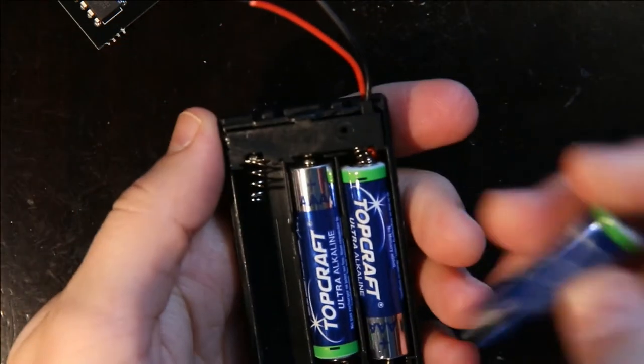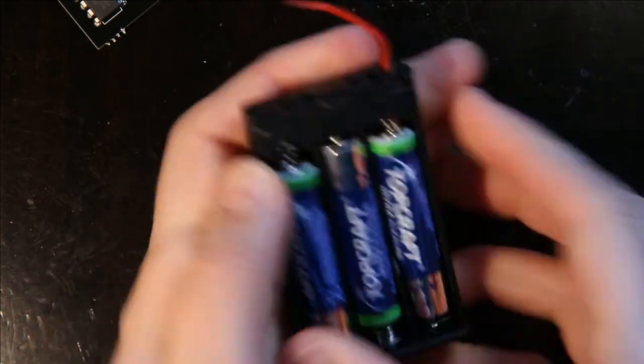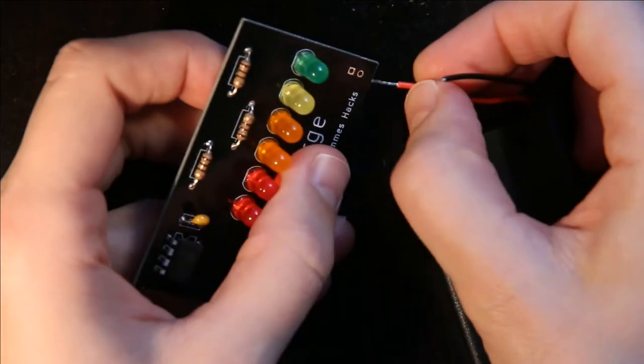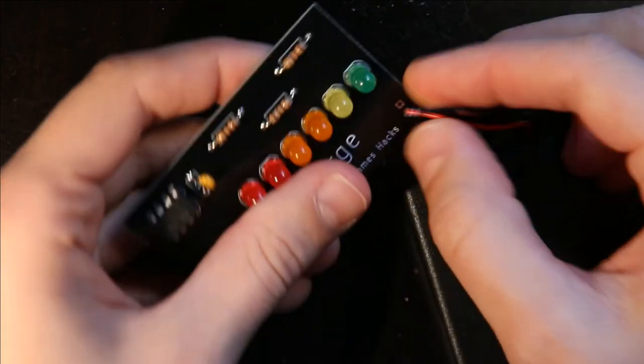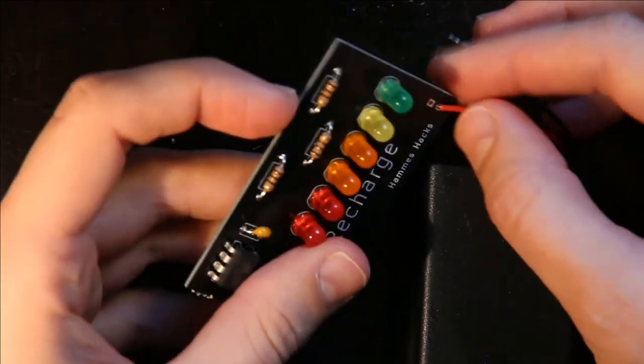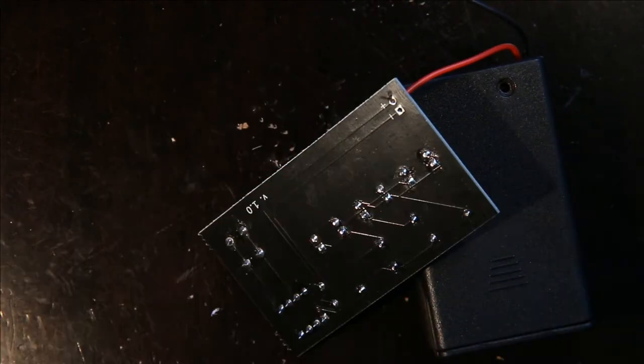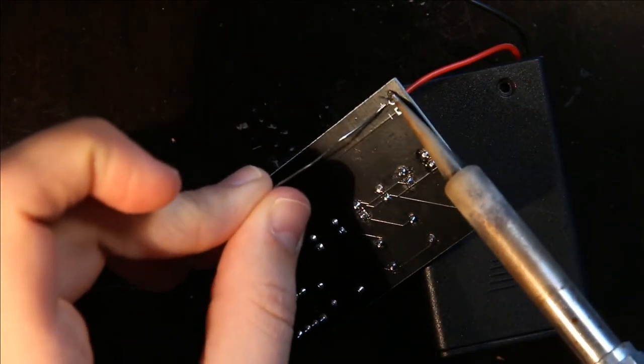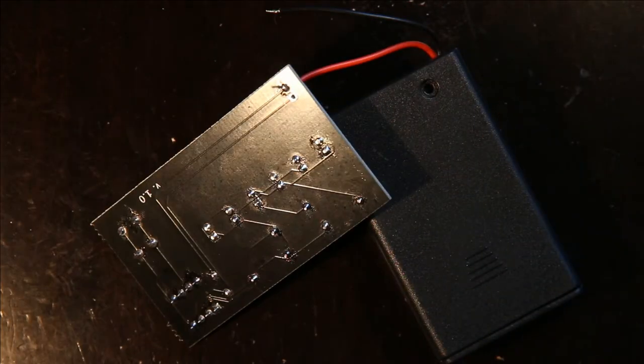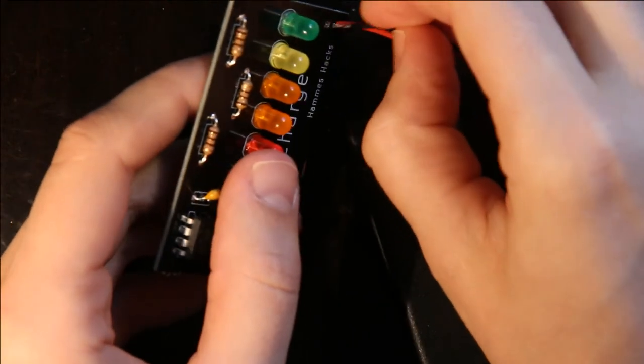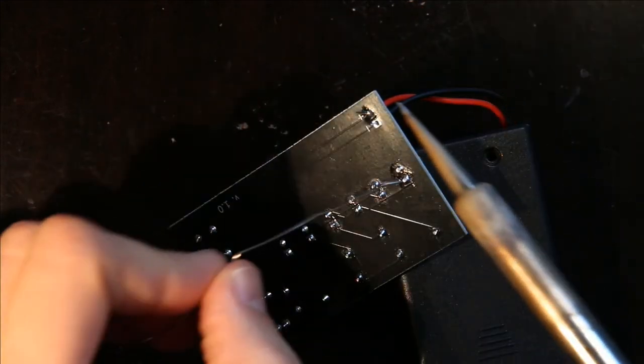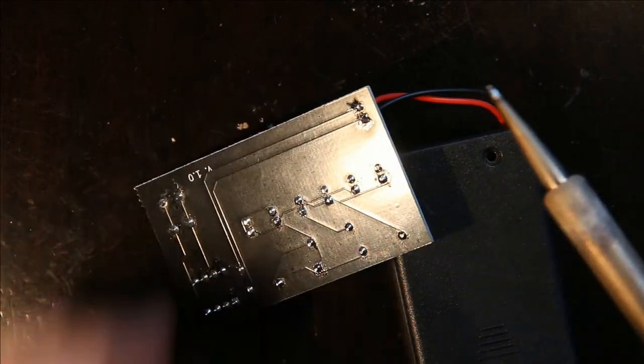Make sure this is in the off position while I do this so that they don't short. Match up the positive, so the red wire with the positive on the PCB. Then flip it over and solder it into place. Similarly, match up the black wire with the negative and solder it into place.